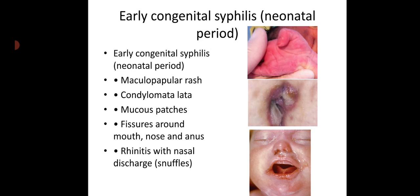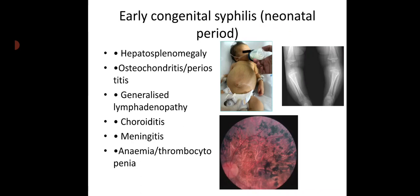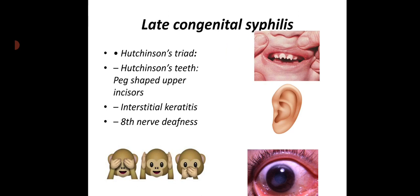Early congenital syphilis in the neonatal period: features include maculopapular rash, condyloma lata, mucous patches, fissures around the mouth, nose, and anus. Rhinitis with nasal discharge, called snuffles, can occur. Other features include hepatosplenomegaly, osteochondritis or periostitis, generalized lymphadenopathy, choroiditis, meningitis, anemia, and thrombocytopenia.